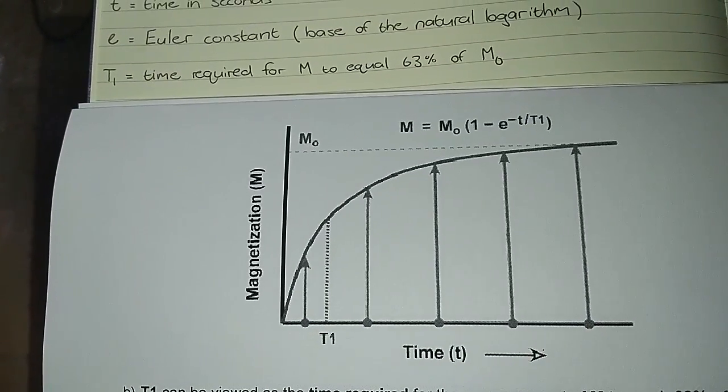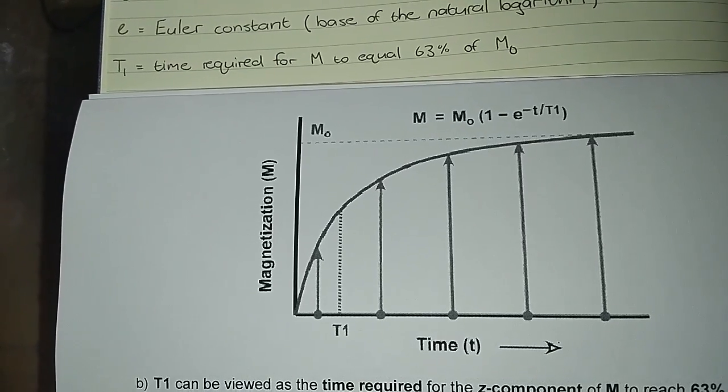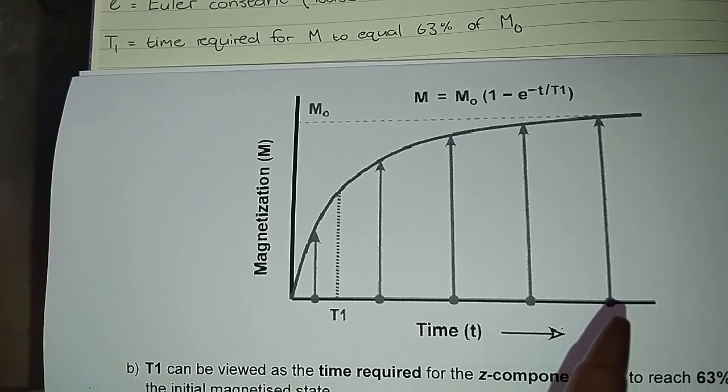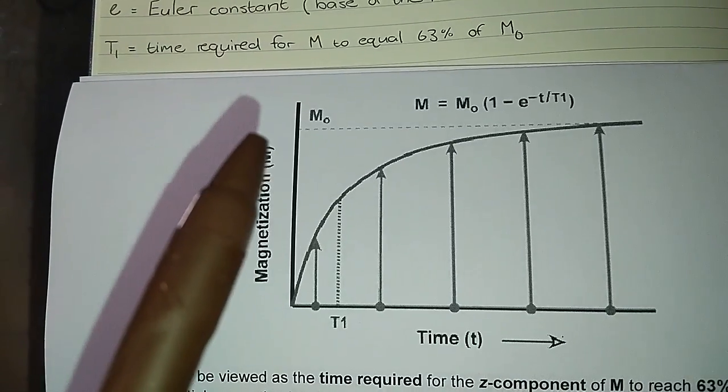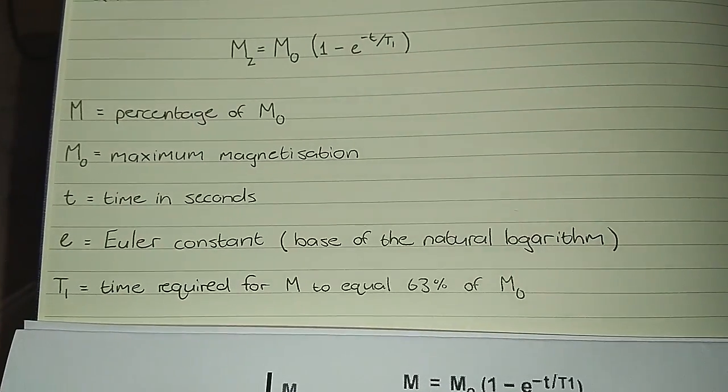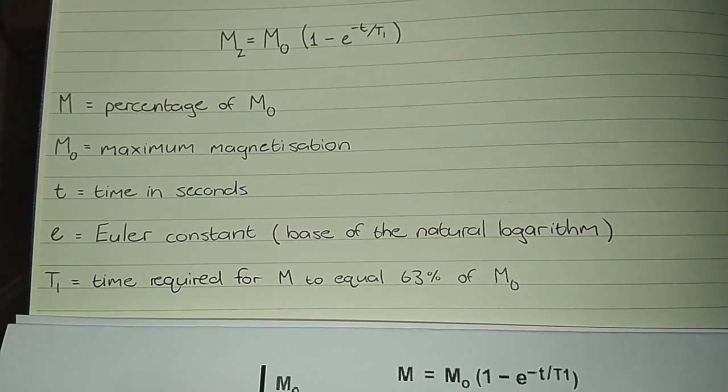And we can see here that M naught is essentially reached at 1, 2, 3, 4, 5 seconds. If you go look at that website that's linked to this, they will actually explain that to you that at a time of 5 seconds the value essentially equals the M naught.